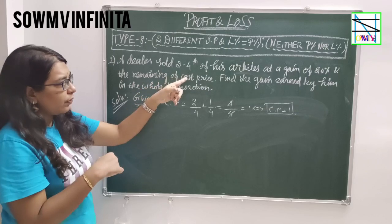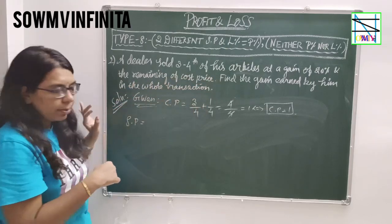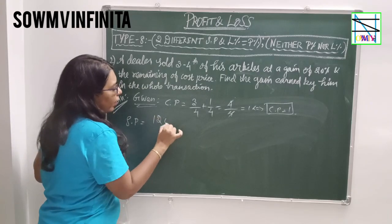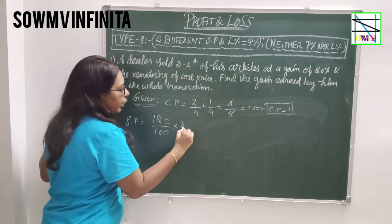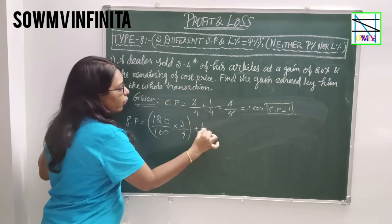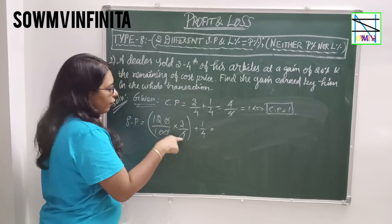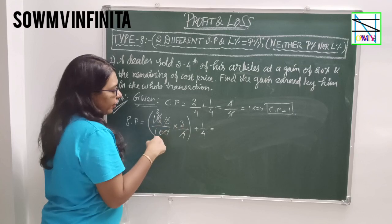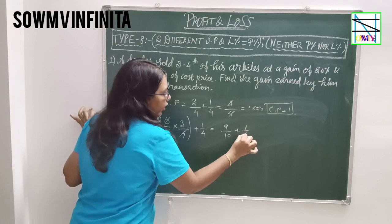He sold 3/4 of his articles at a gain of 20%, so that is 120/100 of 3/4. The remaining 1/4 is sold at cost price. Simplifying: cancel zeros, 3 × 4 = 12, giving 9/10 plus 1/4.